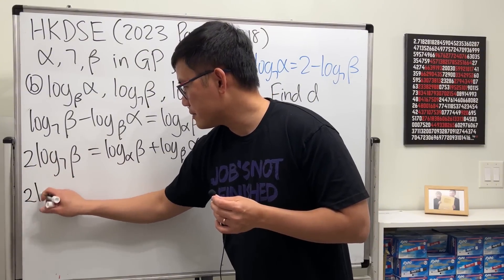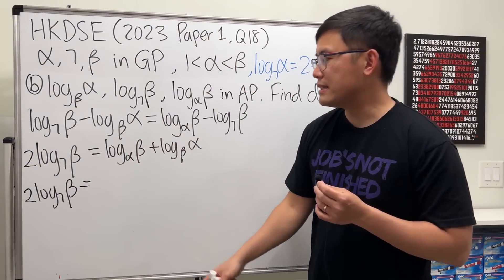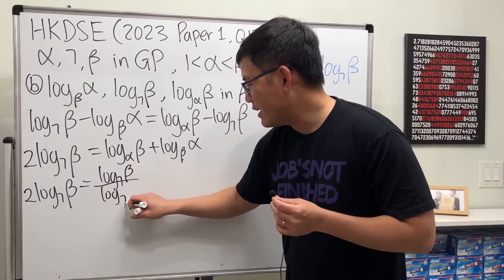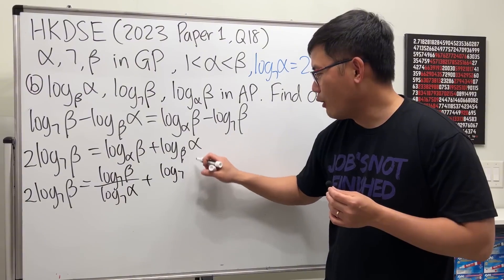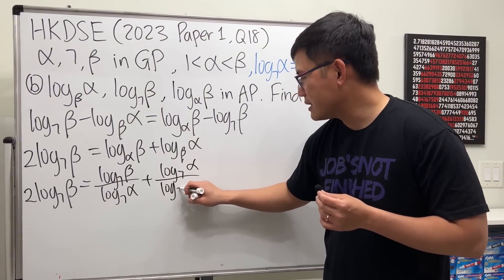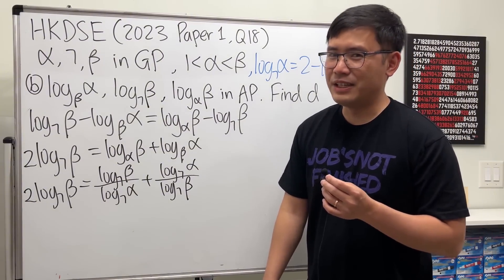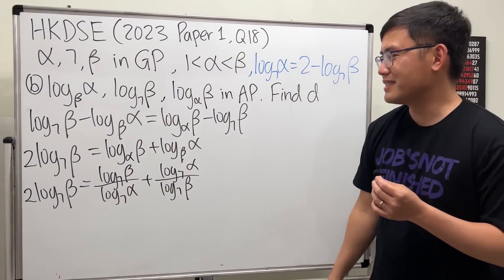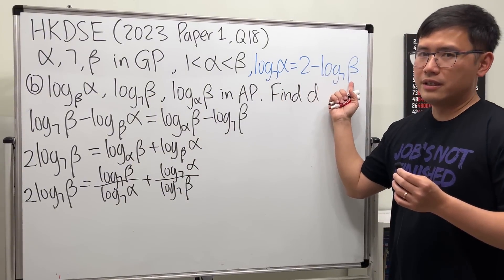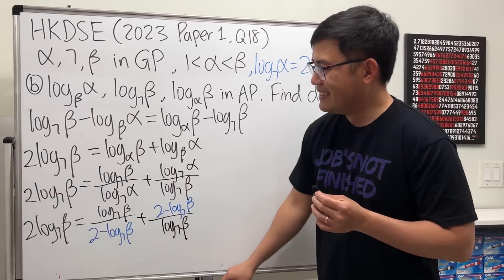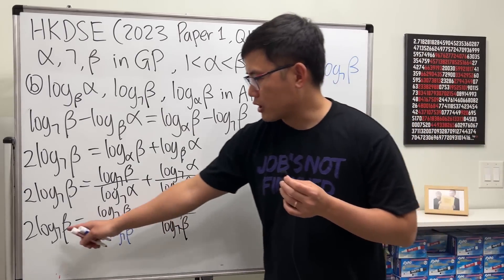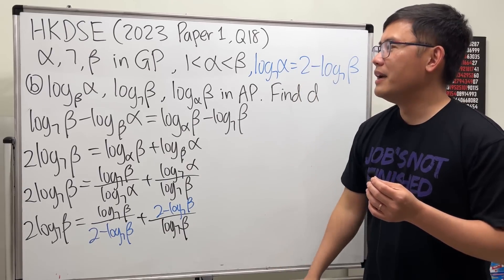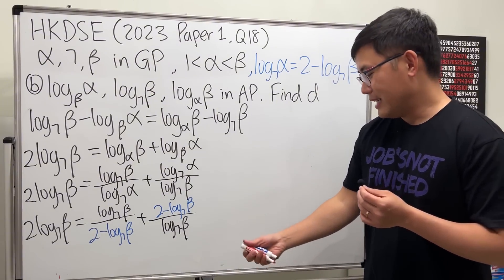Applying the change of base formula, the left side 2·log₇β stays, and the right side becomes log₇β / log₇α + log₇α / log₇β. At this point you can see that the expressions from part A appear here — log₇α = 2 − log₇β — so we're going to plug that result in and solve for log₇β. That's the key insight.